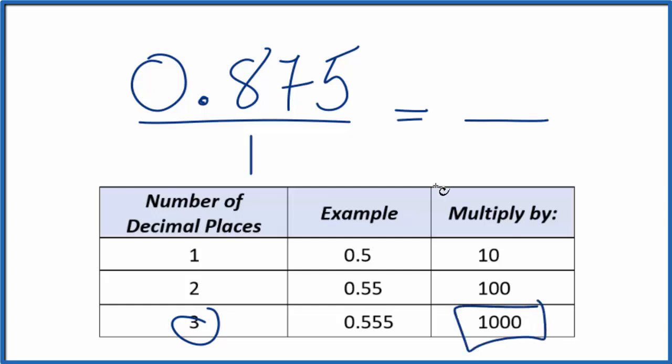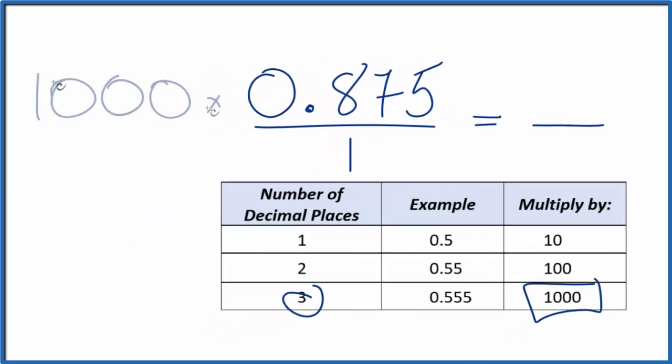By a thousand. So we're going to multiply the top here by a thousand. A thousand times 0.875, that's 875. So now we have a whole number, but 875 is not equal to 0.875. What we need to do is.